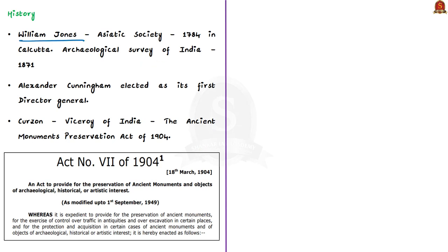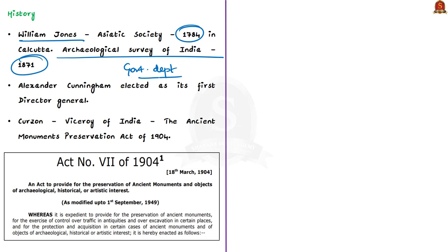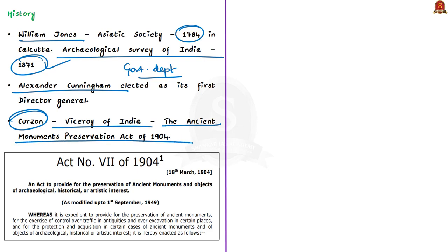In modern Indian history, archaeological and historic pursuits began with the efforts of William Jones, who founded the Asiatic Society in 1784 in Calcutta. The Archaeological Survey of India was created in 1871 as a government department, with Alexander Cunningham as its first Director General. Till 1904 there was no legislation to protect important monuments; during the time of Curzon as Viceroy of India, this changed with the passing of the Ancient Monuments Preservation Act of 1904. This law gave a firm footing to the Archaeological Survey of India, and since then it has successfully conducted excavations, rediscovered the past, and protected important heritage structures.